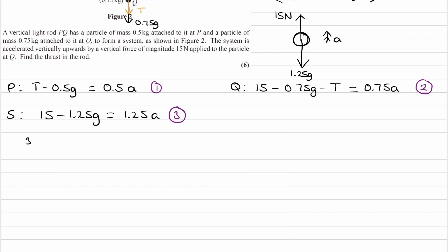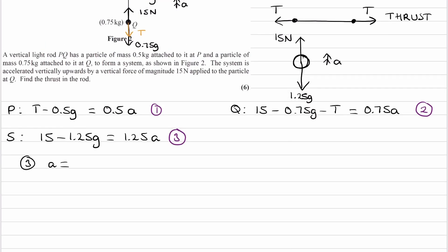Equation 3, if I rearrange it, becomes A equals 50 minus 1.25g, all over 1.25. This gives you 2.2 meters per second squared. We can then put this acceleration into equation 1. So equation 1: T equals 0.5A plus 0.5g. That's just bringing this over to the right side. Type this into your calculator and you end up with 6 Newtons, which is the final answer.